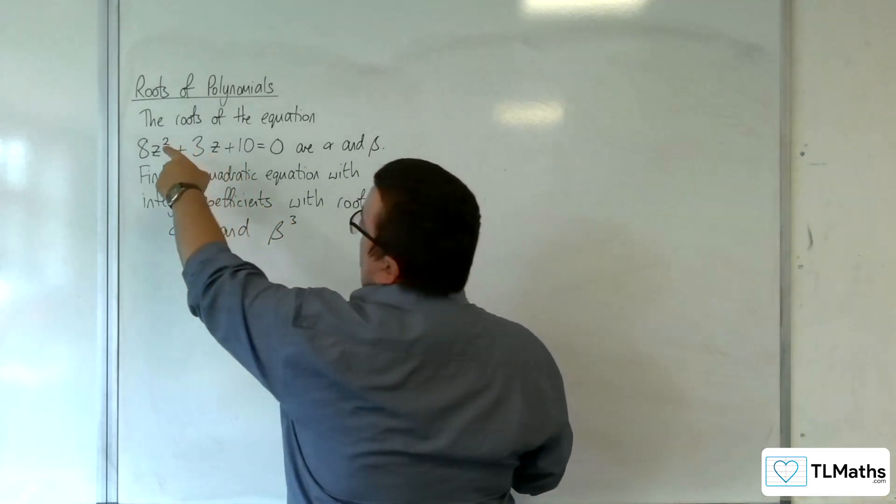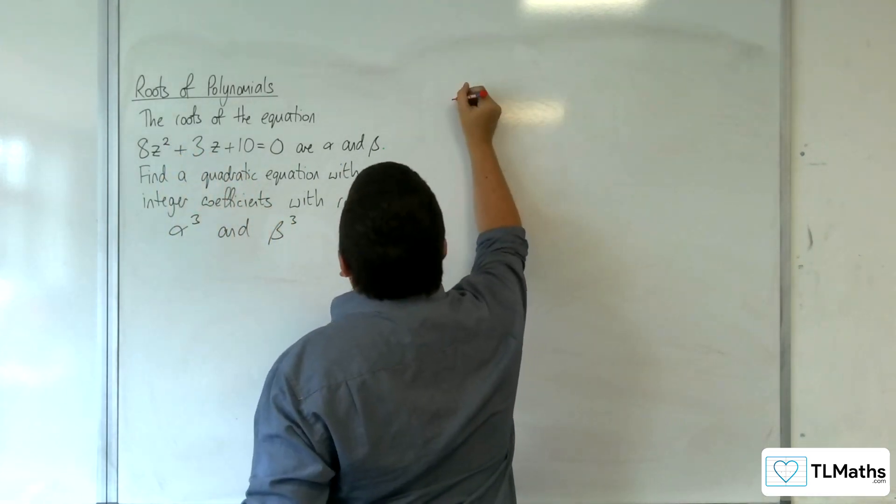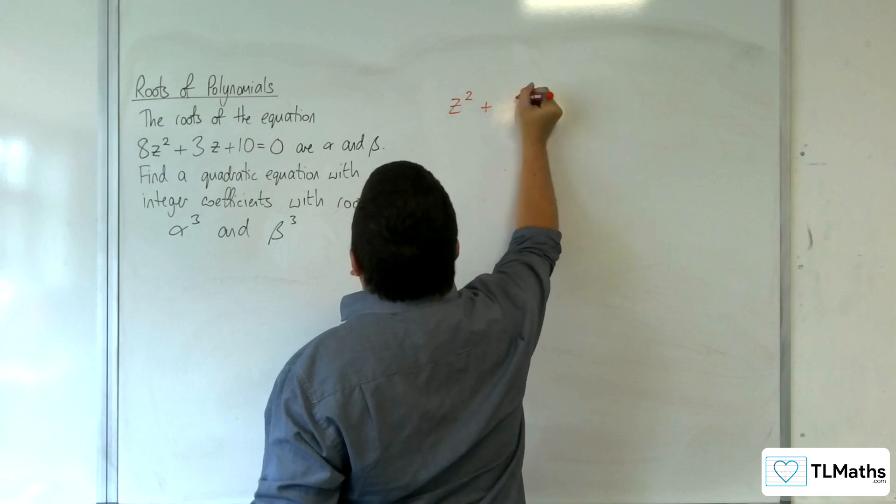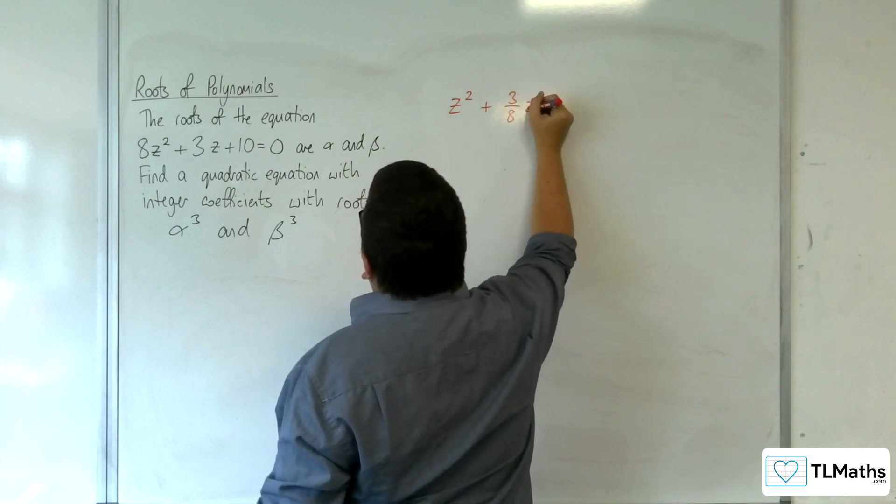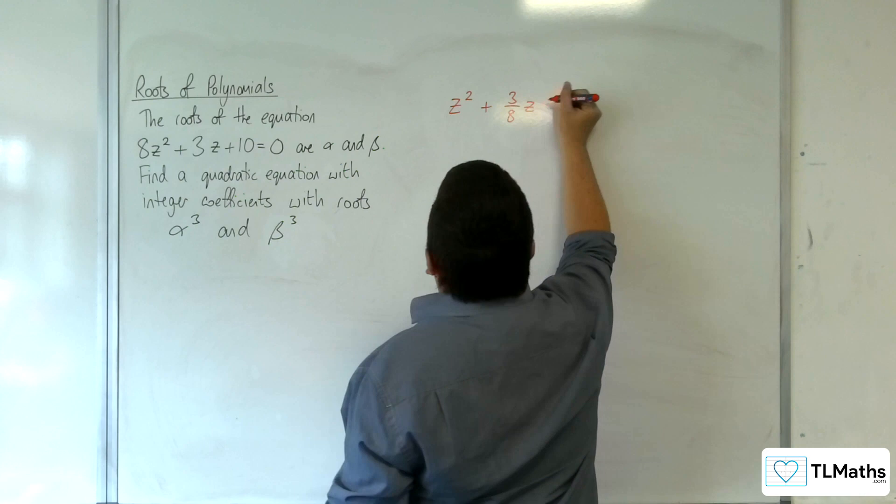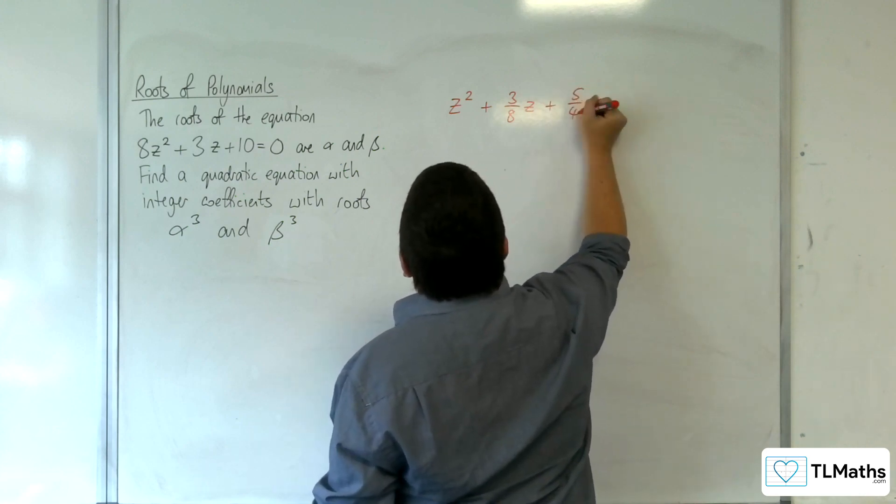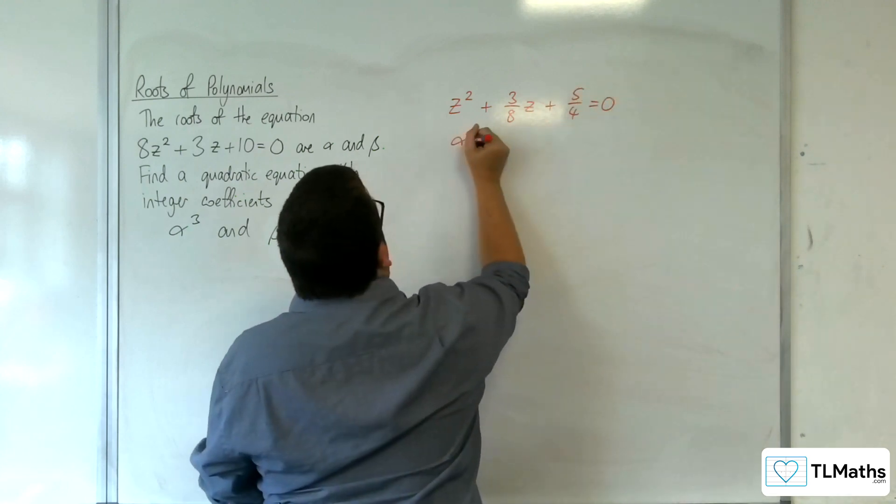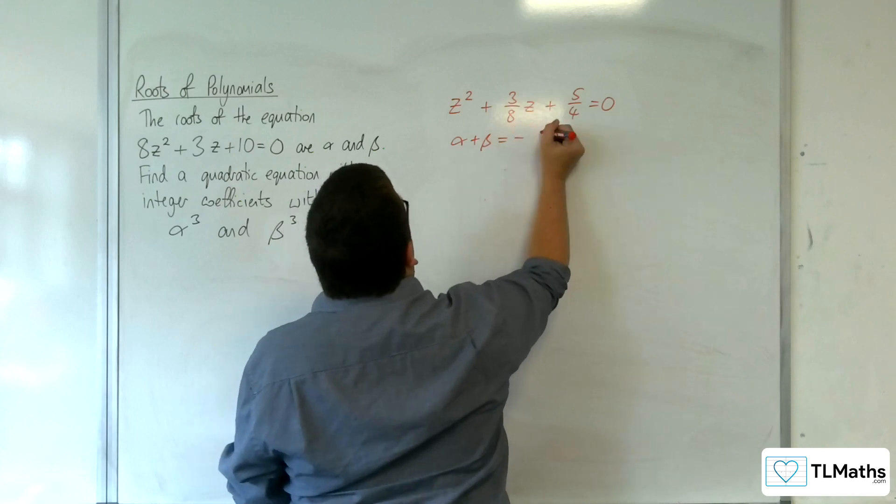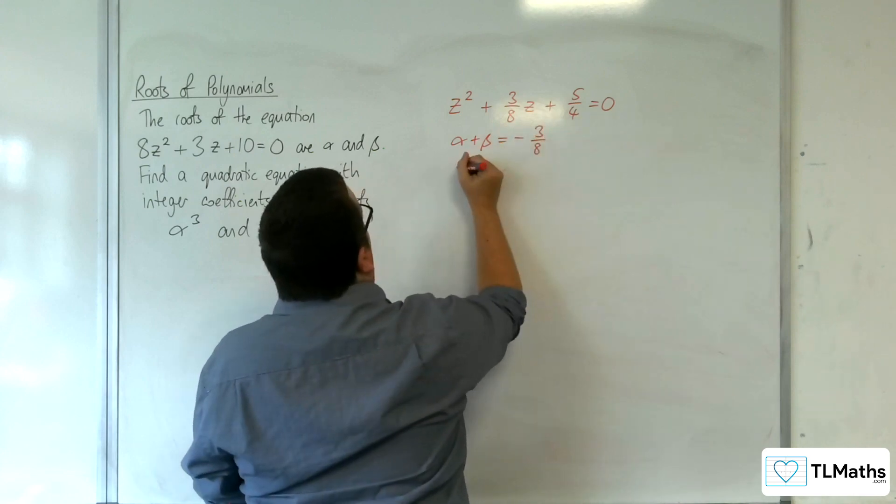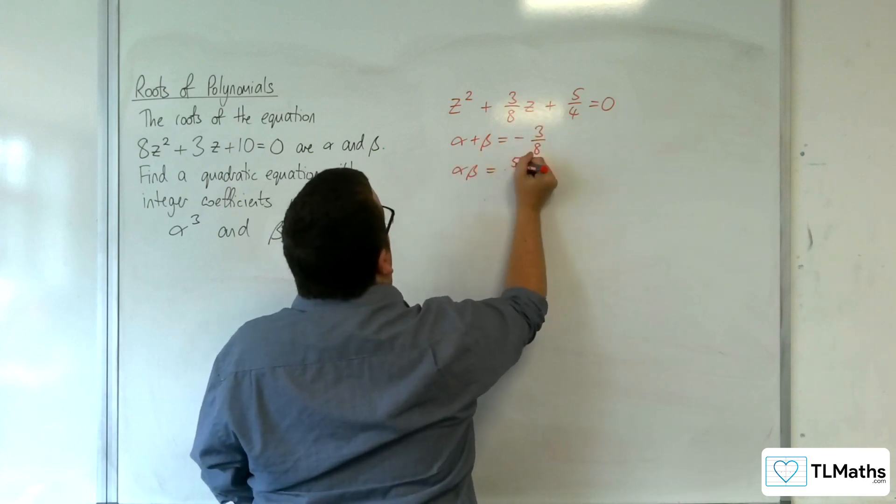The coefficient of z² is 8, so we divide through by 8. We get z² + 3/8 z + 5/4 = 0. So the sum of my roots is -3/8 and the product is 5/4.